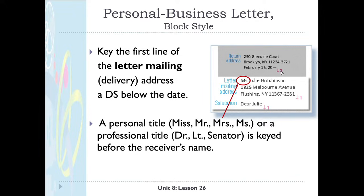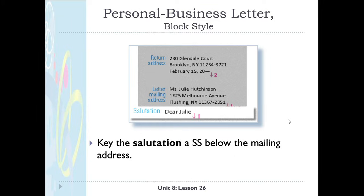The little red or pink colored '2' with the arrow down on the PowerPoint stands for double space. The letter mailing address is where the letter is being mailed to. A personal title — whether it be Miss, Mr., Mrs., or even a professional title like Doctor, Lieutenant, or Senator — is keyed before the receiver's name. In this case, Miss Julie Hutchinson is the first line.